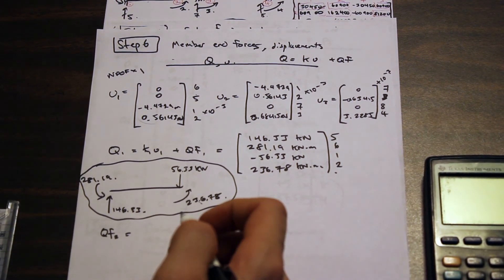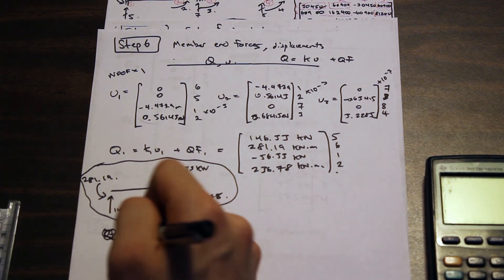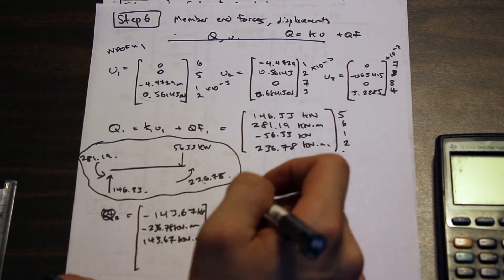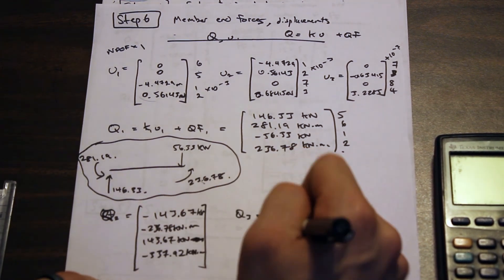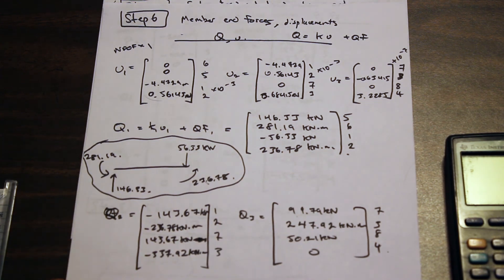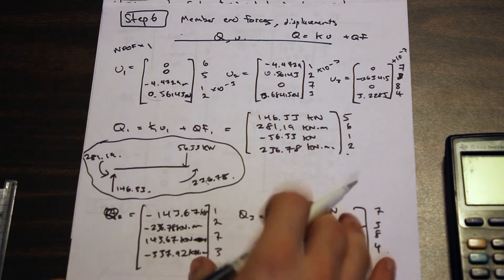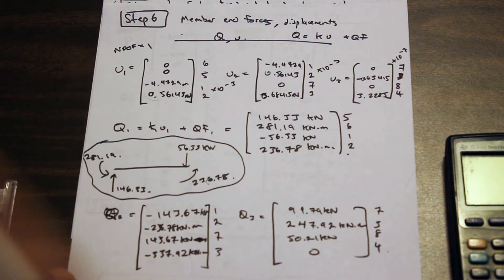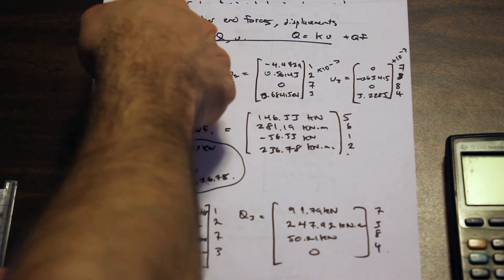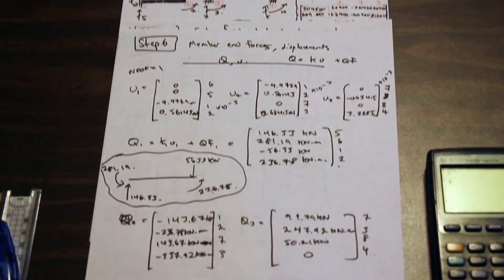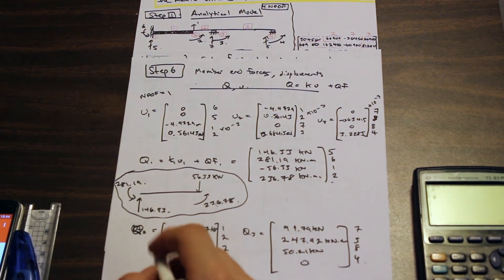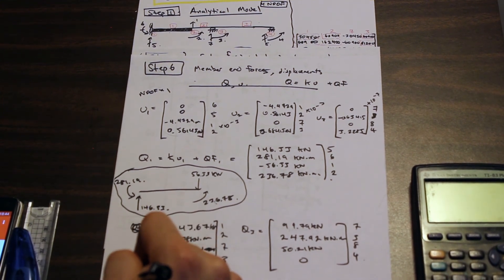Calculate q2 and q3 in the same way. Once you have q1, q2, and q3, the problem is essentially done. These vectors contain all of the forces acting on each individual member — both forces at degrees of freedom and support reactions. The final step is to extract the support reactions.